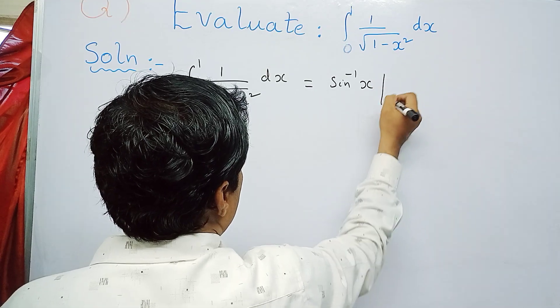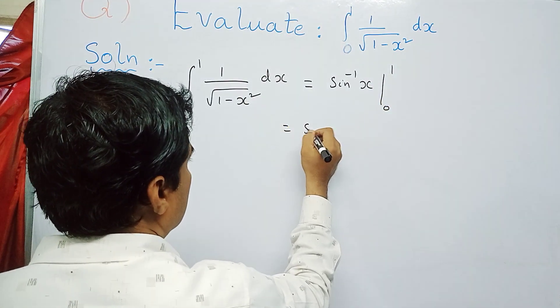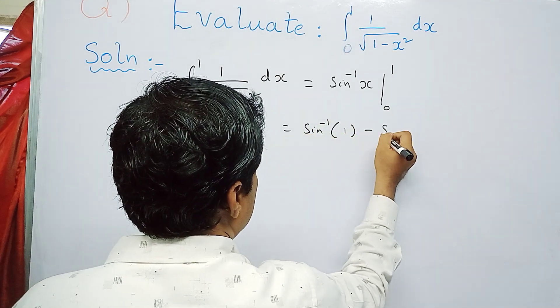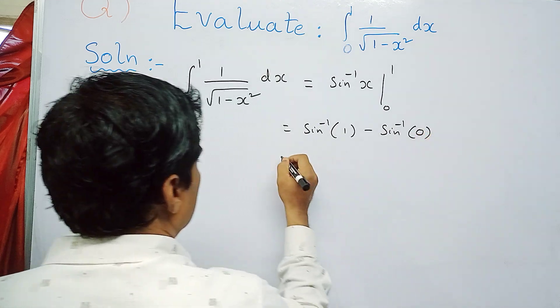In place of x, first put the upper limit. So sine inverse of 1 minus sine inverse of the lower limit, which is 0. That is sine inverse of 1 minus sine inverse of 0.